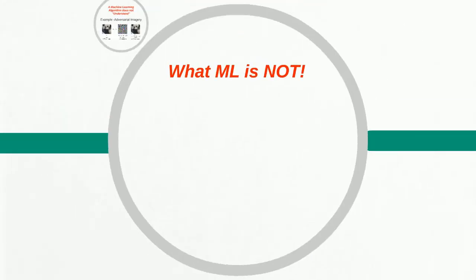What machine learning is not is probably a better way to understand the differences between artificial intelligence and machine learning. First, machine learning is not logic — it is not rule satisfaction. For example, if we had a simple logic scenario like if A meets B and B knows C, does A know C? This is a question that machine learning would not be able to answer. Remember, machine learning is based in statistics, not necessarily in logic. So when it comes to logic and rule satisfaction, we have to rule machine learning out.